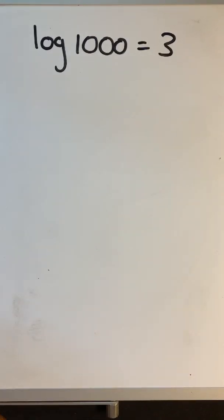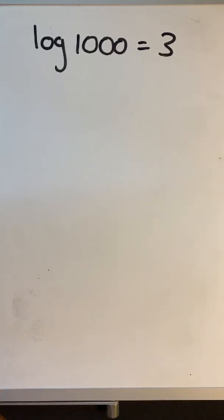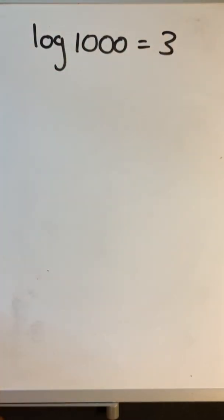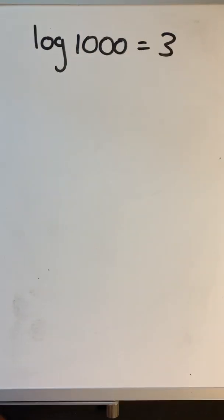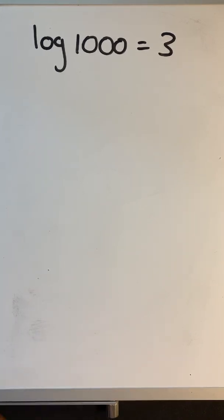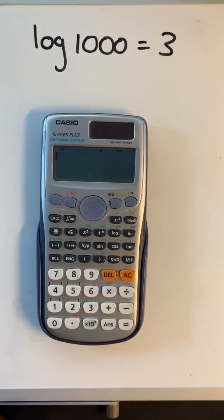Moving to the calculation side of things: we know log to the base 10 of a thousand equals 3, but what about log of 900, 600, or 650? We would start getting decimals — not something we could guess. Years ago we had log tables to look these up, but now we can do all of this on a calculator.